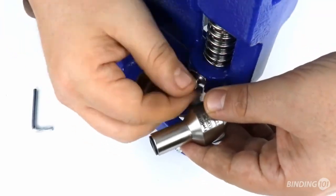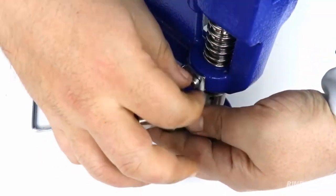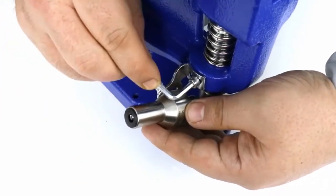Now screw the pointer onto the machine using the Allen screw and tighten with your Allen wrench.